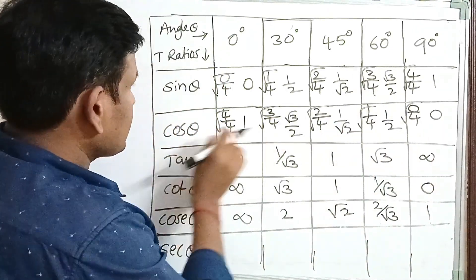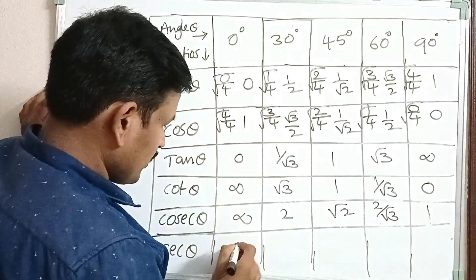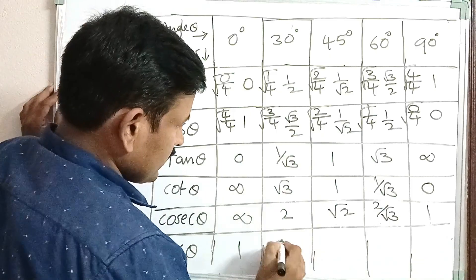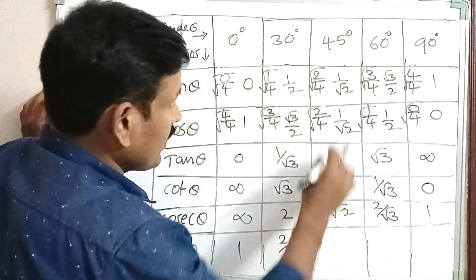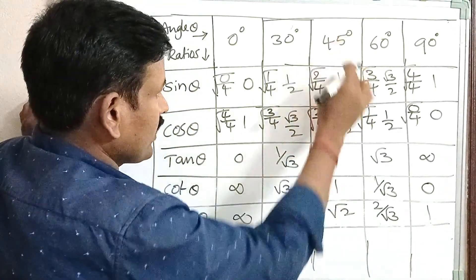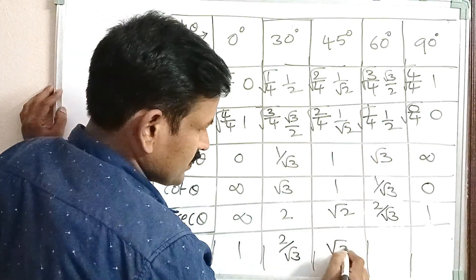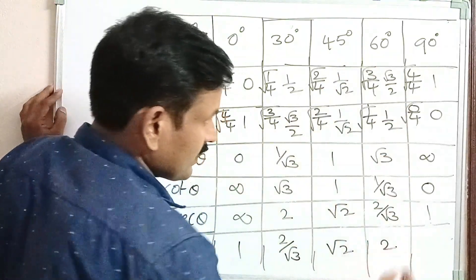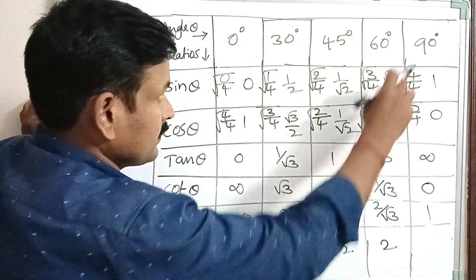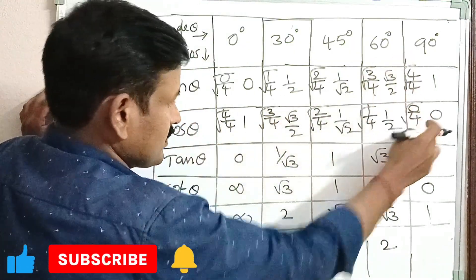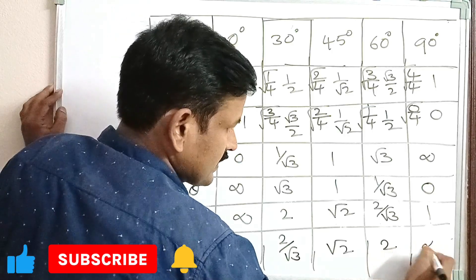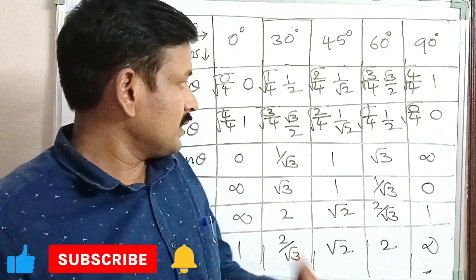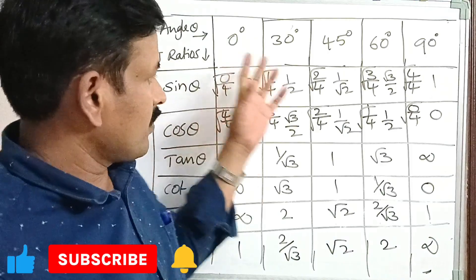Cos 0 is 1, so sec 0 is also 1. Cos 30 is root 3 by 2, so sec 30 is 2 by root 3. Cos 45 is 1 by root 2, so sec 45 is root 2. Cos 60 is 1 by 2, so sec 60 is 2. Cos 90 degrees is 0, so sec 90 degrees is infinite.